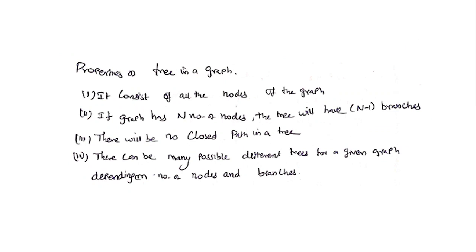Now the properties of a tree: the tree consists of all the nodes of a graph — while drawing a tree, all nodes must be present. If the graph has n nodes, the tree will have n minus 1 branches. There must be no closed path in a tree — this is an important point. There can be many possible different trees for a given graph depending on the number of nodes and branches.